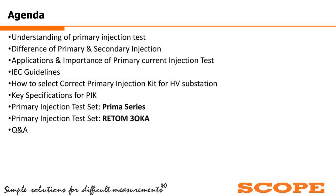Today's webinar agenda: first, to understand the basics of the primary current injection test; then we will understand the difference between primary injection and secondary injection; then the applications and importance of the primary current injection test; and the different IEC guidelines proposed by IEC 61869 for the CT, for metering protection and special protection.